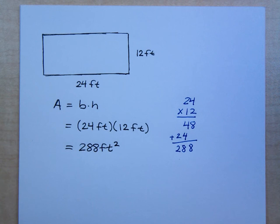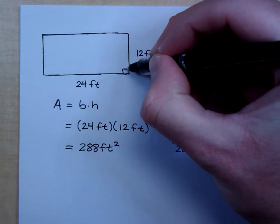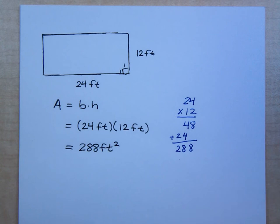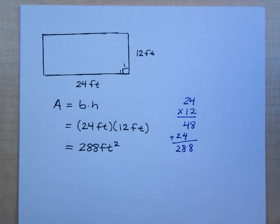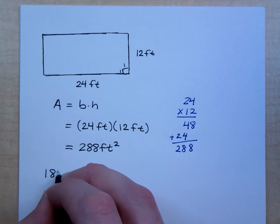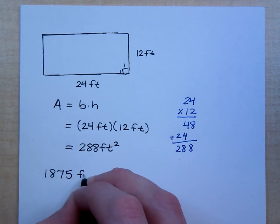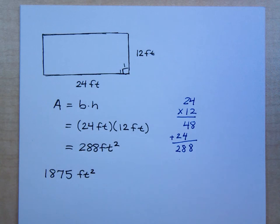That means that I could have drawn 288 squares on the floor that were 1 foot by 1 foot. Now, let's do some more math here. The square footage of my house was about 1,875 square feet. I had 288 square feet that I never used. So, how many square feet did I really use in my house?